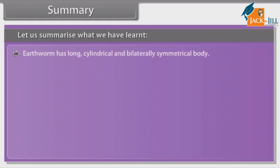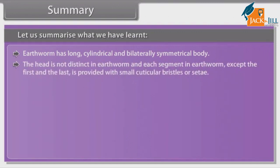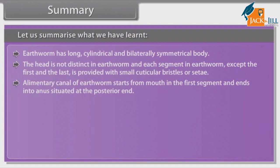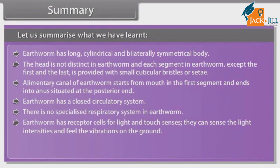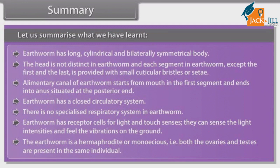Summary: Earthworm has a long, cylindrical, and bilaterally symmetrical body. The head is not distinct in earthworm, and each segment except the first and the last is provided with small cuticular bristles or setae. The alimentary canal of earthworm starts from the mouth in the first segment and ends into the anus at the posterior end. Earthworm has a closed circulatory system. There is no specialized respiratory system in earthworm. Earthworm has receptor cells for light and touch; they can sense light intensities and feel vibrations on the ground. The earthworm is a hermaphrodite, meaning both ovaries and testes are present in the same individual.